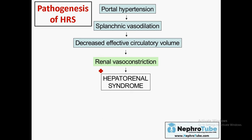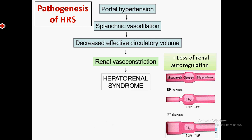Decreased effective circulatory volume leads to renal vasoconstriction and decreased renal perfusion — this is what causes hepatorenal syndrome. Hepatorenal syndrome is a functional disorder; however, the kidney at the tissue level is usually normal. The problem is mainly due to disturbance in the renal vasculature. In hepatorenal syndrome, there is also a loss of renal autoregulation of the afferent arteriole.